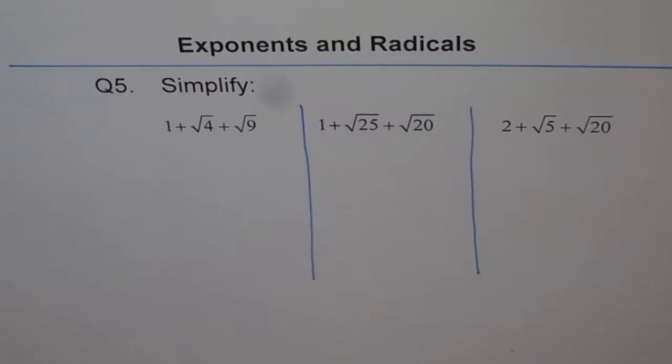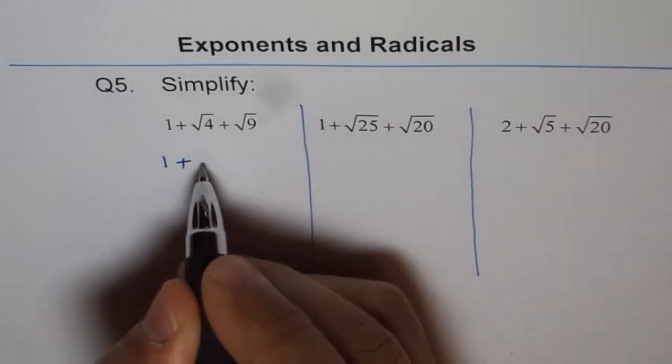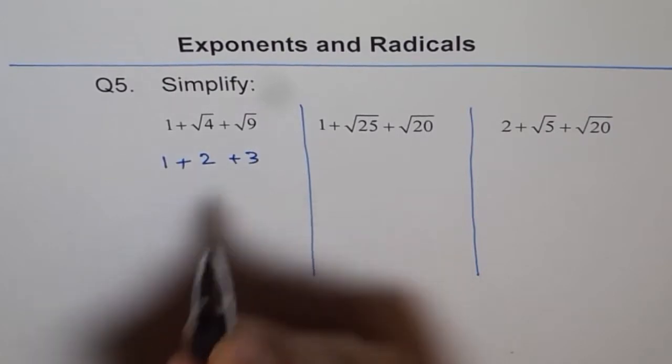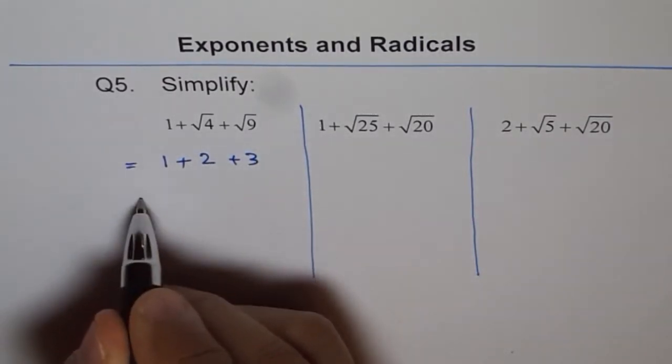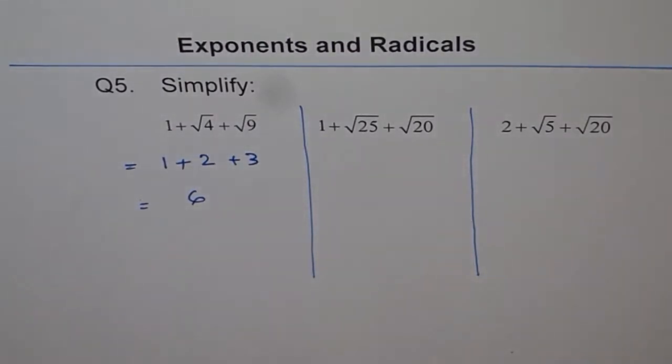Let's do the first one, which is 1 plus square root 4 plus square root 9. Now, 1 can be written as such, square root of 4 is 2, and square root of 9 is 3. So 1 plus 2 plus 3 can be written as 1 plus 2 is 3, 3 plus 3 is 6. So that is the simplified expression, or you can also say we evaluated this equal to 6.